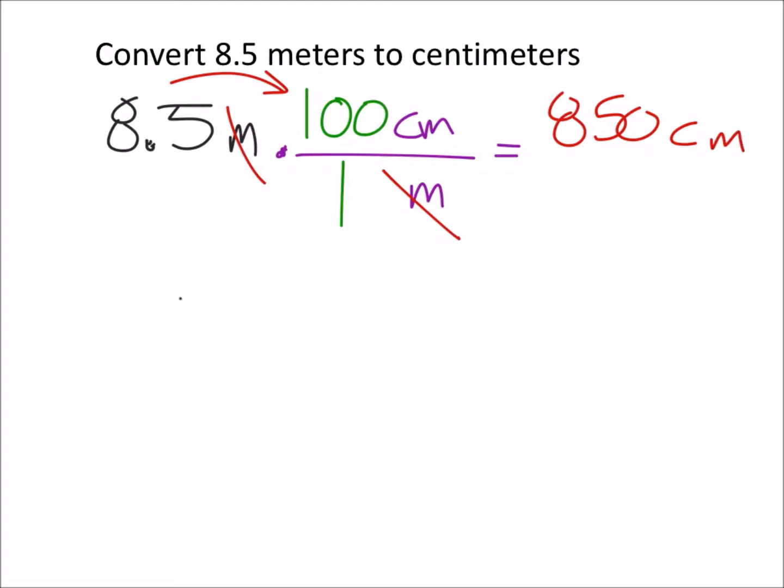If we look at just moving the decimal, this was 8.5 meters. If we look at the chart we got meters, we would have had decimeters and then centimeters.